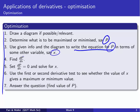Then we find the derivative, set it to zero, and solve for X. This is where we find our critical points and determine where we can get maxima or minima. Once we've done that, we use either the first or the second derivative test to see which values of X give maxima or minima. We choose the one we want given the question, and that gives us our answer — stated back in words matching the problem's wording.